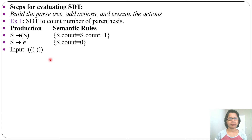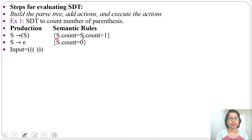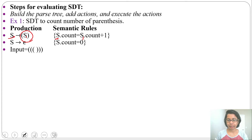First step: identify the attribute type — whether it is S-attribute or L-attribute. In the rule S.count = S1.count + 1, this S.count is dependent on its child S.count. So it is a synthesized attribute. Also, the semantic rules are written at the end of the production, so this is an S-attributed SDT.